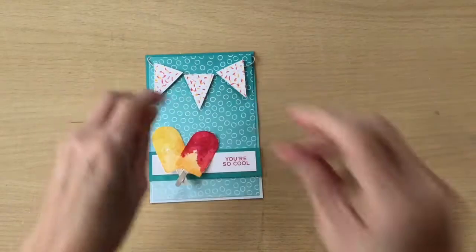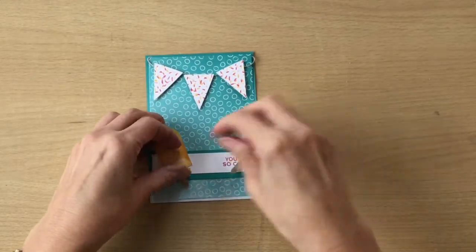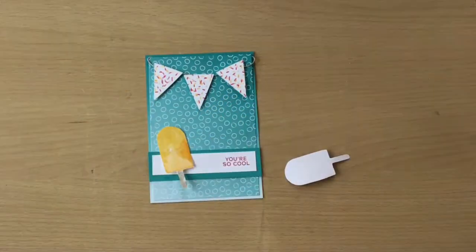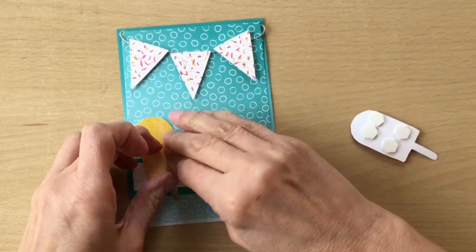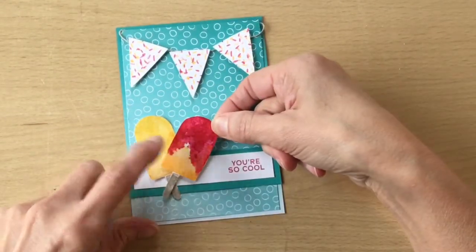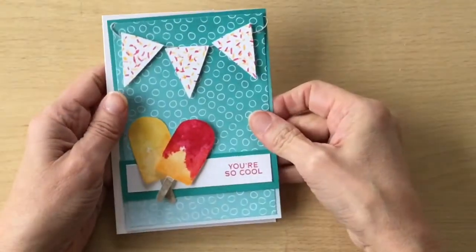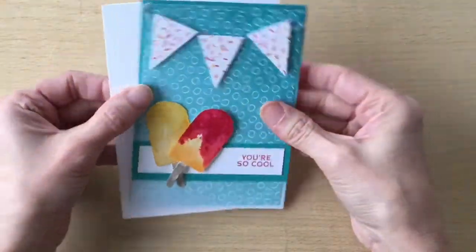And then I've got my lovely shiny lollies. I'm going to stick the bottom one and put the top one on dimensionals. And then we've nearly finished, we just need to stick this to the white card base.